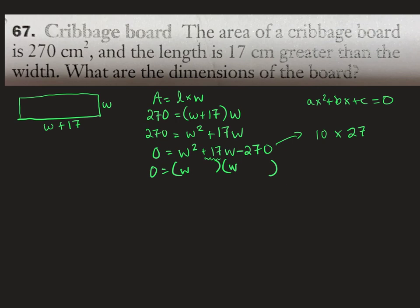So we just need to have positive 17. So it'd have to be positive 27, negative 10. So we'd have W minus 10, W plus 27. And now that it's factored and equal to zero, each factor could be zero, and therefore make the whole thing zero.